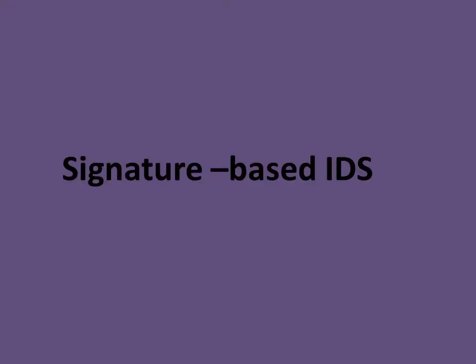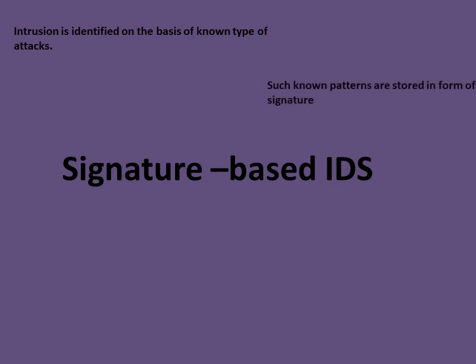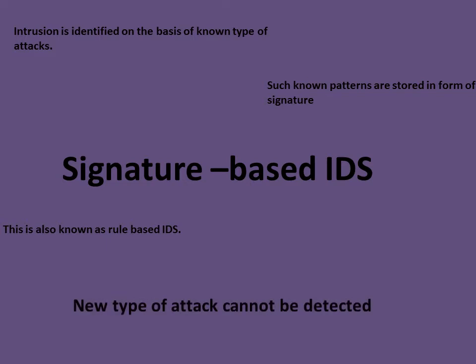There are three types of IDS based on how they function. Signature-based IDS identifies intrusion on the basis of known types of attacks. Such known patterns are stored in the form of signatures. This is also known as rule-based IDS. However, new types of attacks cannot be detected.